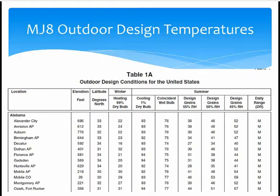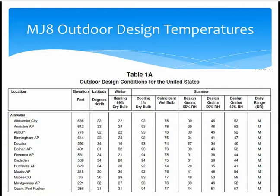Here's an example of table 1A's layout. The leftmost column is location — here, all cities for the state of Alabama. Moving to the right, the table gives us the elevation, latitude, heating 99% dry bulb temperature, cooling 1% dry bulb temperature, the coincident wet bulb, the design grains for 55, 50, and 45 percent relative humidity, as well as the daily temperature range for each city. For example, Birmingham Airport: the 99% dry bulb for heating is 23 degrees Fahrenheit, and the 1% dry bulb for cooling is 92 degrees Fahrenheit. The median daily range for Birmingham Airport is medium, meaning the temperature swing throughout a normal day is not going to vary that much.